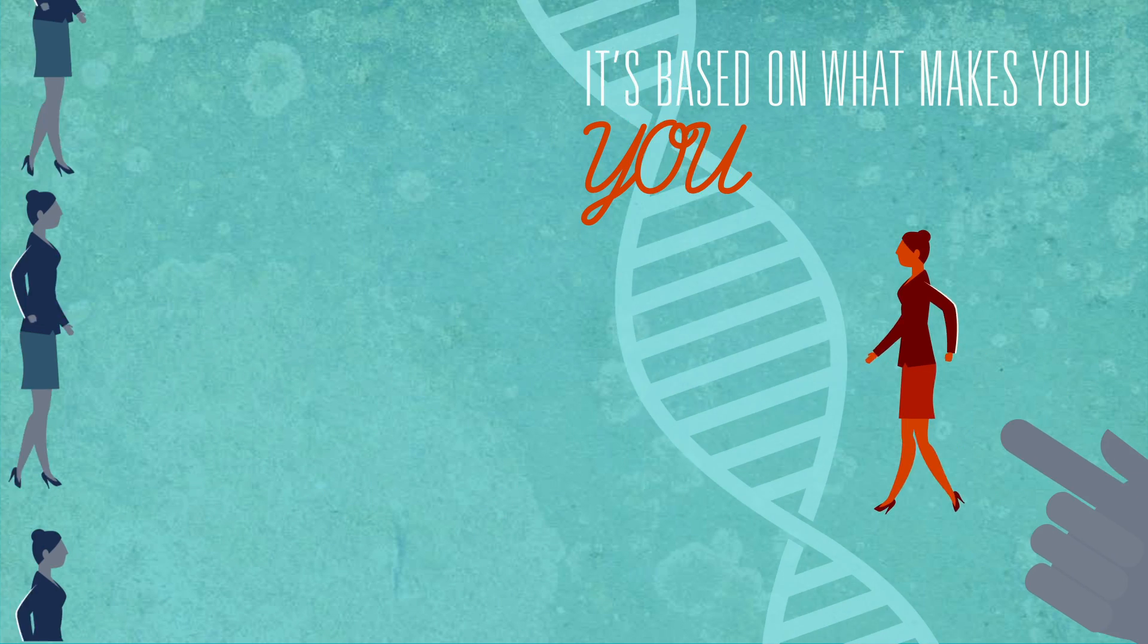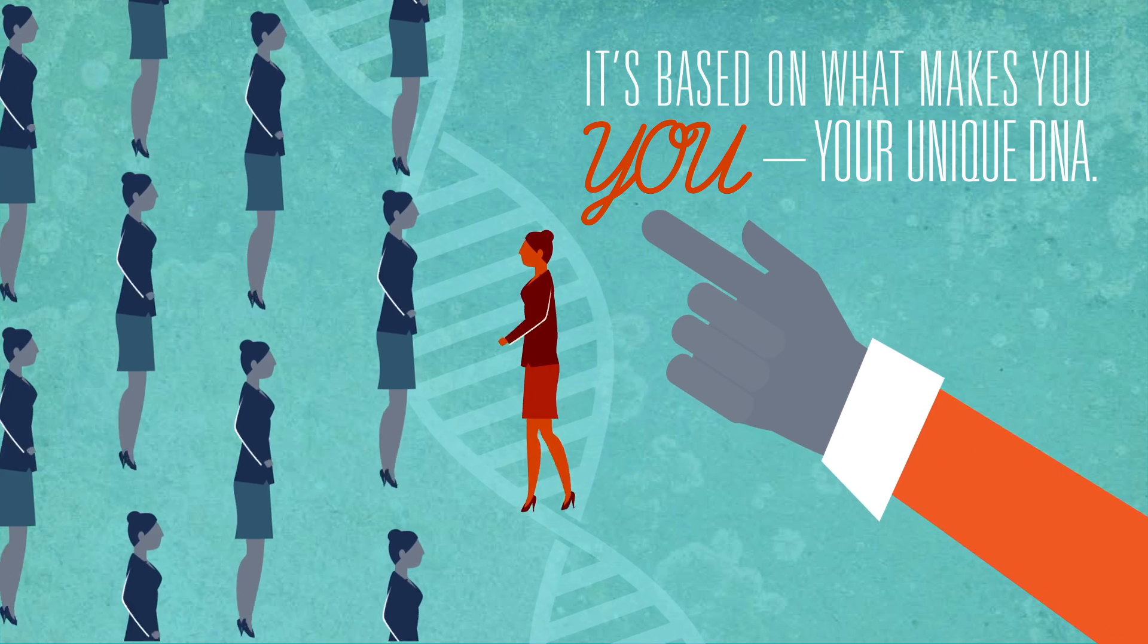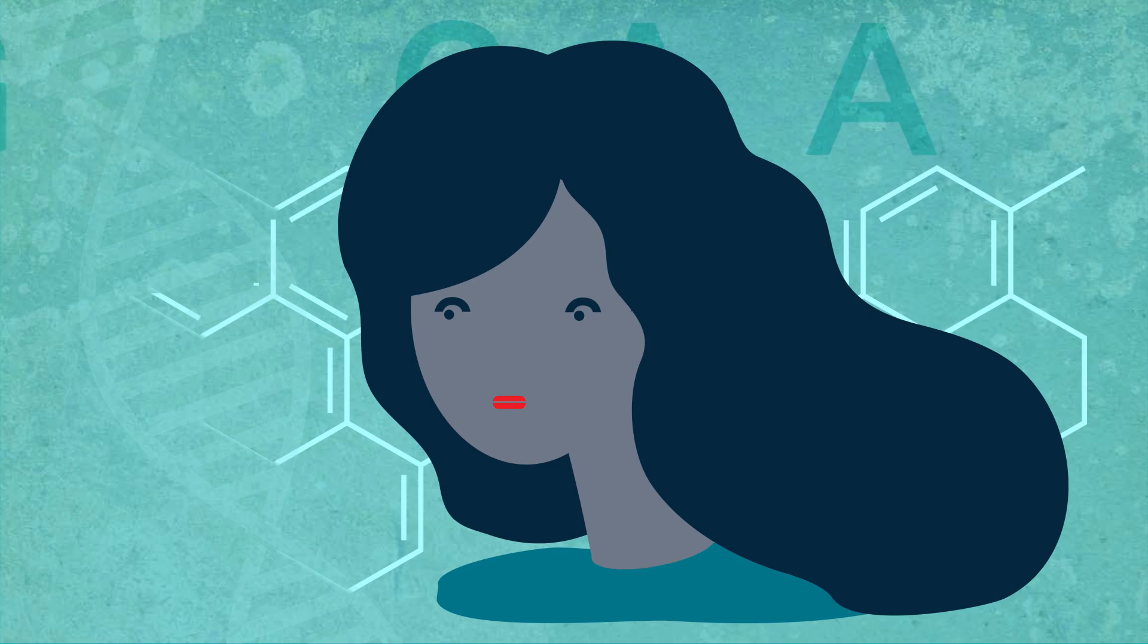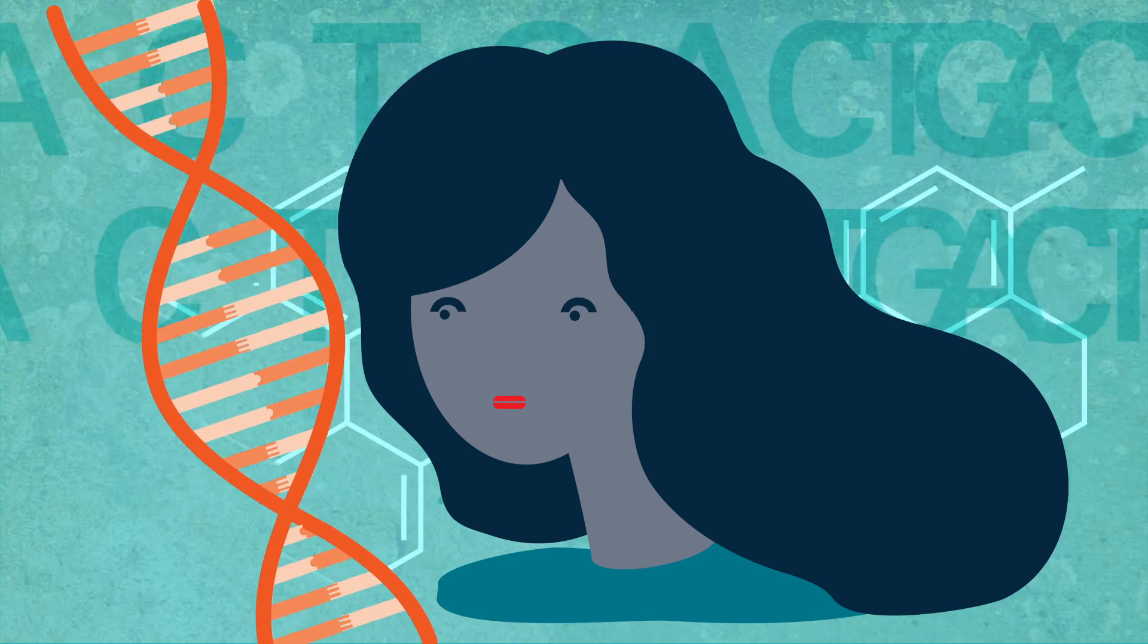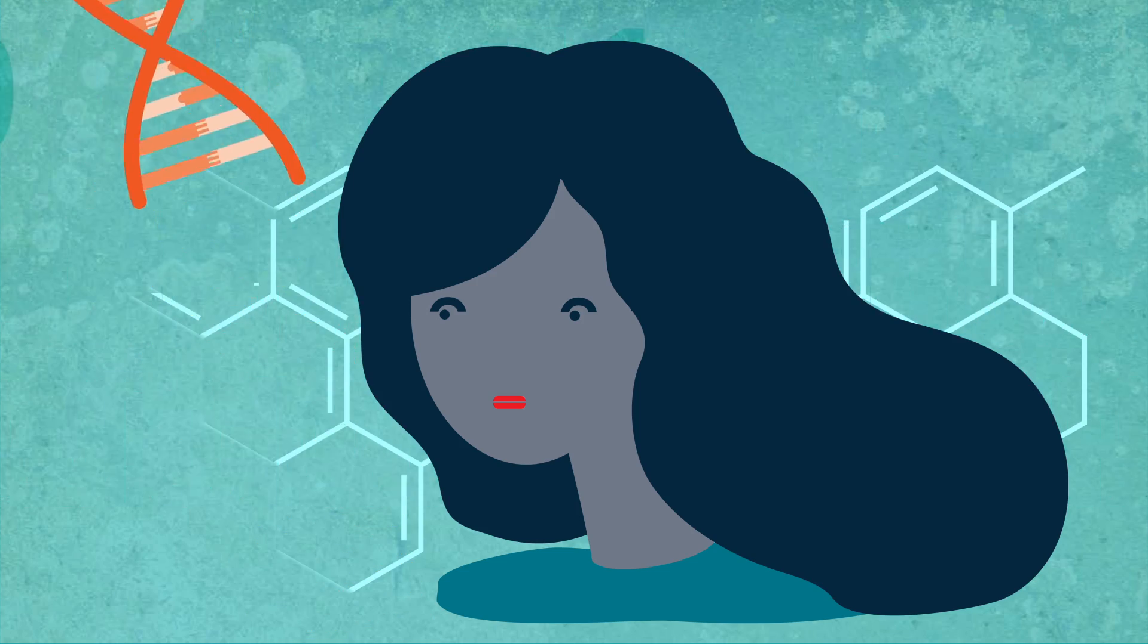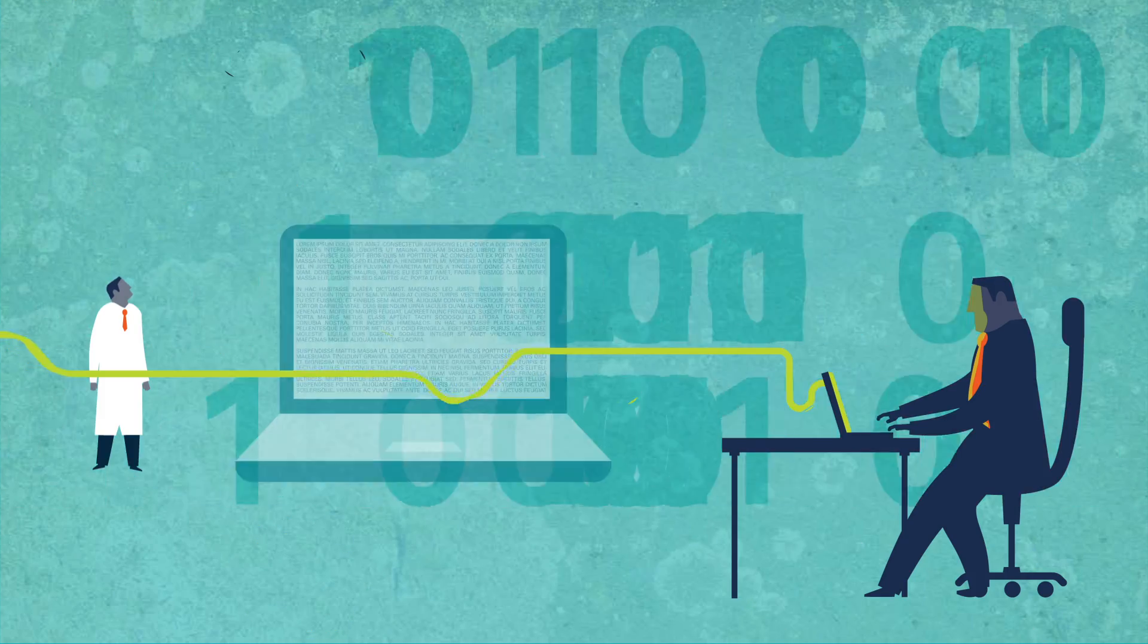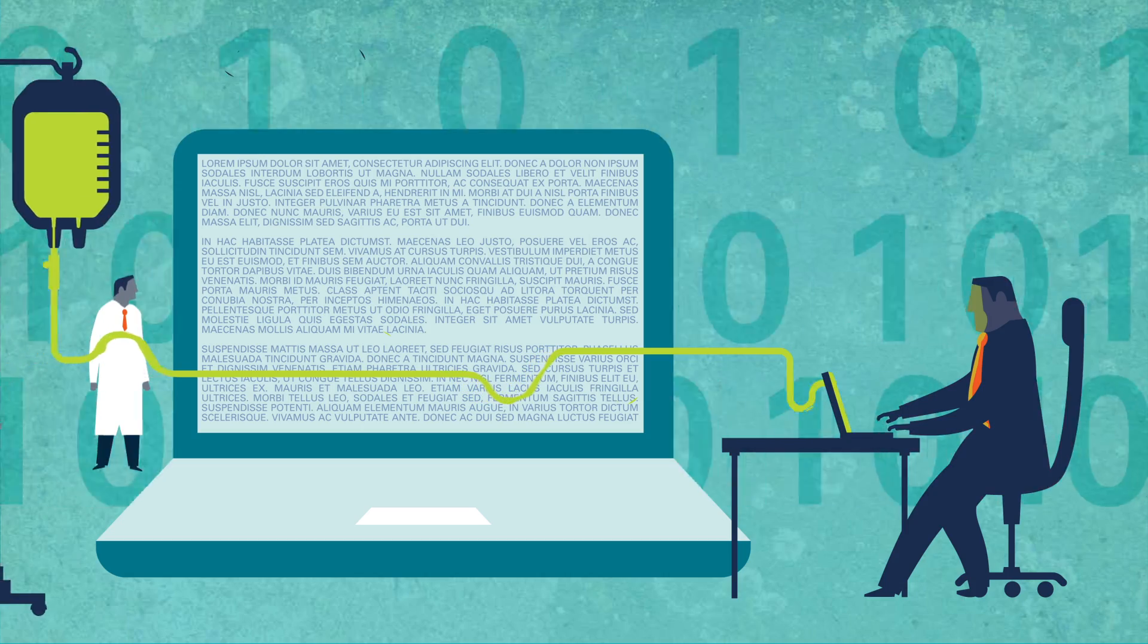It's based on what makes you you, your unique DNA. DNA is a huge strand of four similar building blocks that make up your unique genetic code. This code tells all the cells in your body what to do, like a computer code that tells a computer what to do. But like the glitches that sometimes develop in computer code, changes in DNA called mutations can occur.